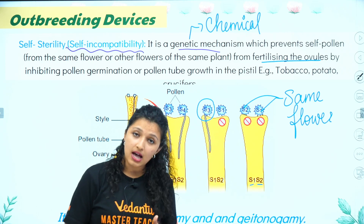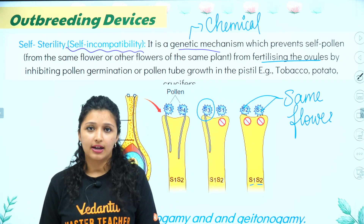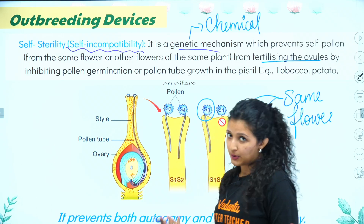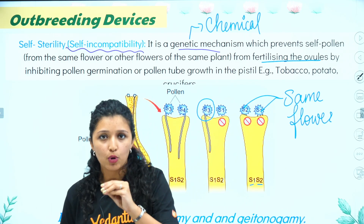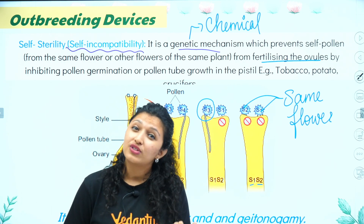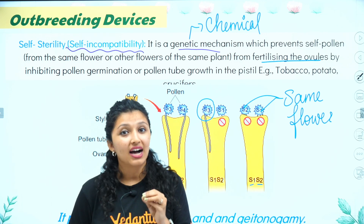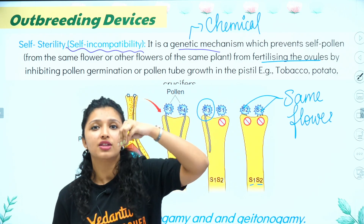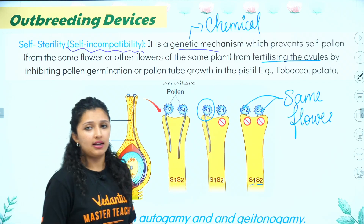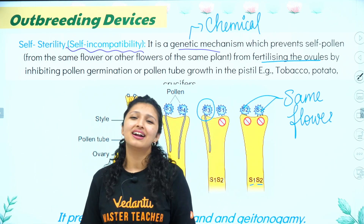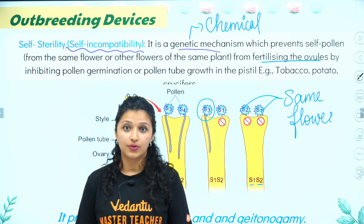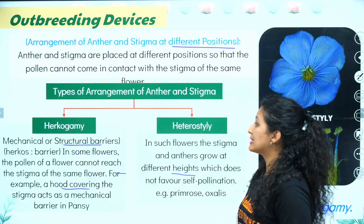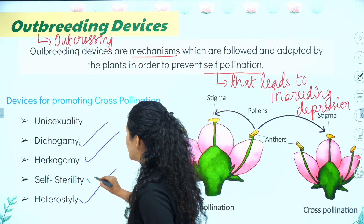The genetic mechanism uses chemicals to say: 'I will not allow you to grow.' This prevents autogamy from the same flower, and also geitonogamy from different flowers of the same plant. Only xenogamy — pollen from a different plant — will be allowed to grow. So self-incompatibility or self-sterility ensures only xenogamy happens.